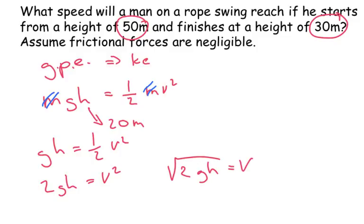So let's put our numbers in. It's going to be 2 times 9.81 times by the height, which was 20, the difference between 50 and 30, and square root of the whole thing. So let me just put the numbers in. And we get a final answer of 19.8 metres per second.